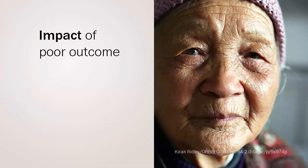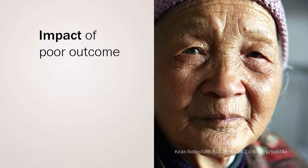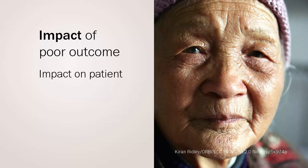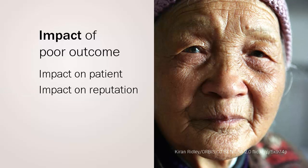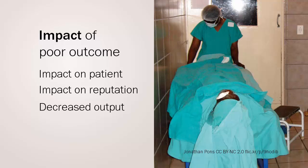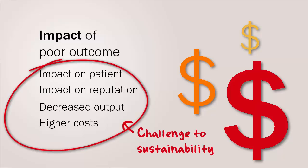Vision less than 6/60 after surgery has a range of impacts. It has a direct and devastating impact on the individual patient whose expectations have not been met. It also impacts on the reputation of the hospital or service provision at a community level, often creating a long-term mistrust of health providers. Reputation at the professional level also needs attention, as issues for training and ethics. Poor outcome means fewer patients and decreased output; fewer cases done means higher costs. Over time, these factors will challenge the sustainability of the service delivery, and the whole eye care programme may fail.